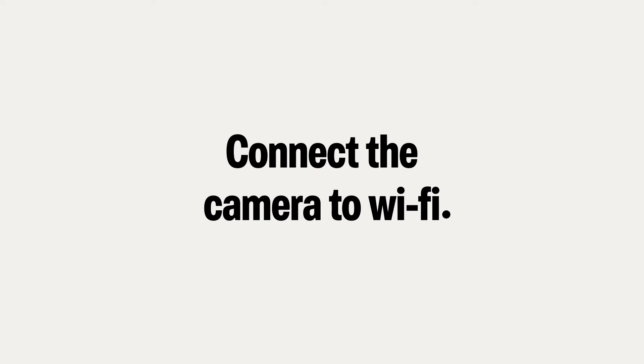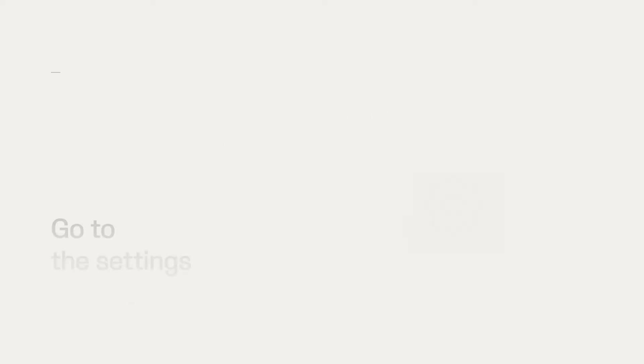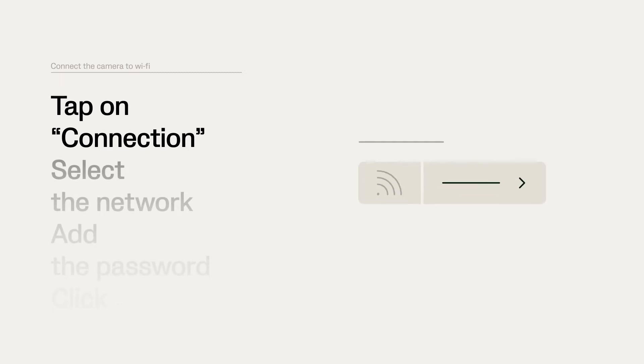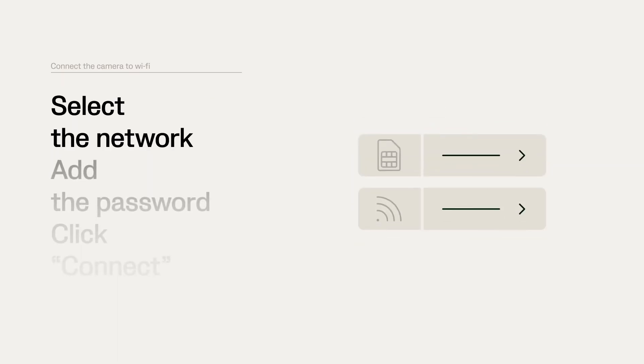To connect the camera to Wi-Fi, go to the Settings page in the VioCamera app. Under Internet Services, tap on Connection, then select the network you want to connect to, add the password, and click Connect.